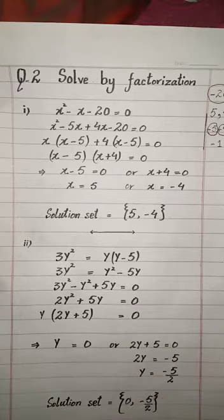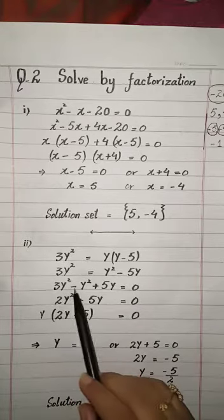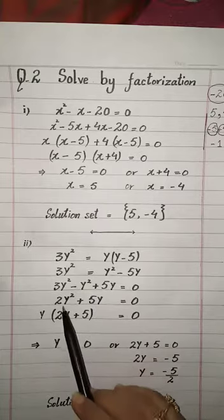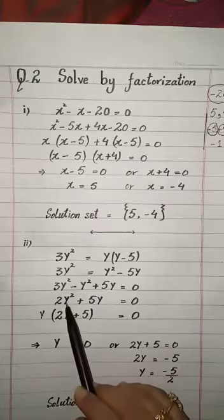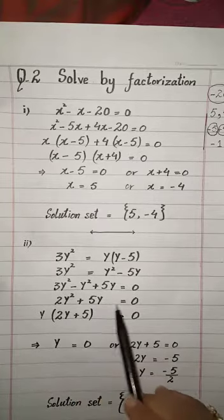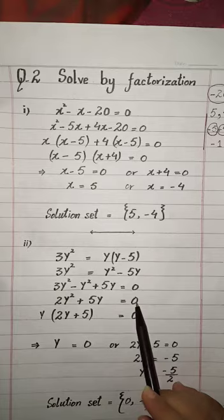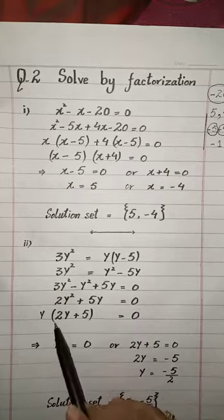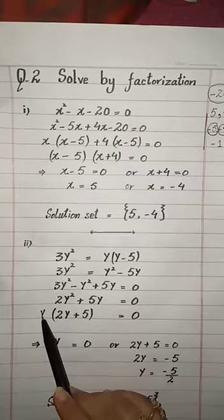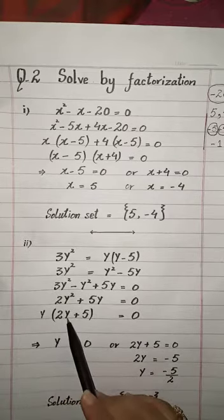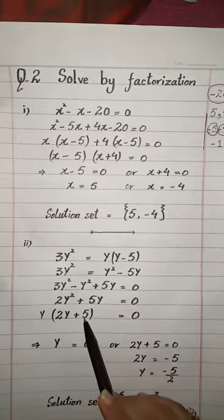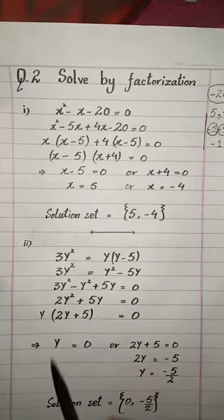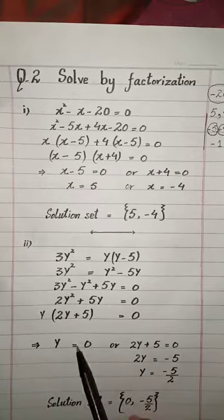That is equal to zero. Now students, you can see: 3y² minus y² is equal to 2y², plus 5y, is equal to zero. From here, y is common — take y common — giving y(2y + 5) = 0.